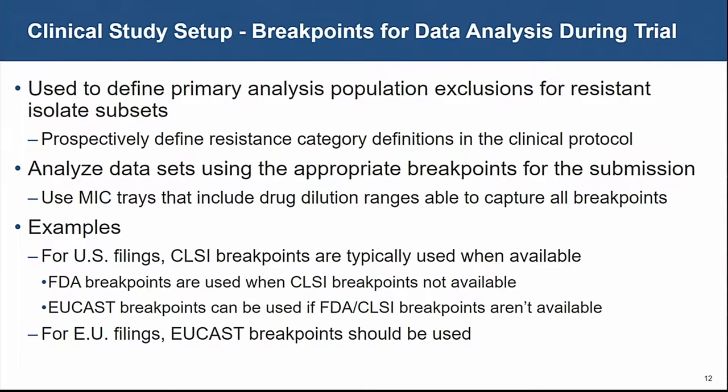In the US, CLSI breakpoints are used when available; if not, FDA breakpoints may be used — for example, FDA breakpoints for tigecycline against Enterobacteriaceae. Where neither is available, such as colistin against Enterobacteriaceae, EUCAST breakpoints are used. For EU filings, EUCAST breakpoints are used.